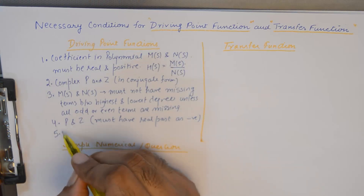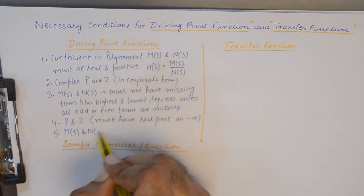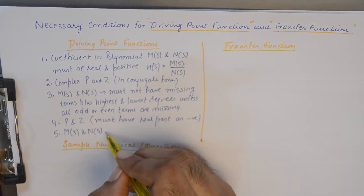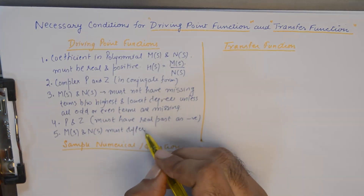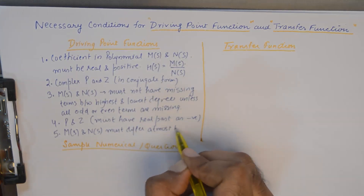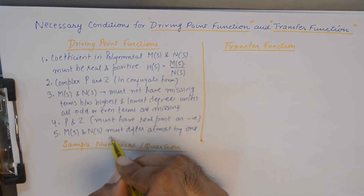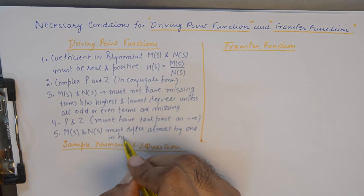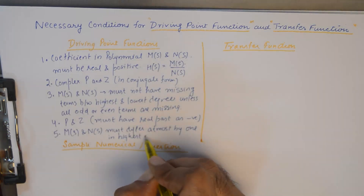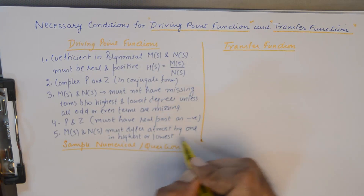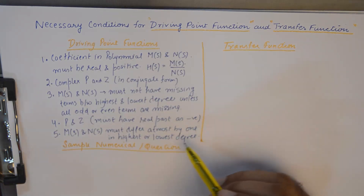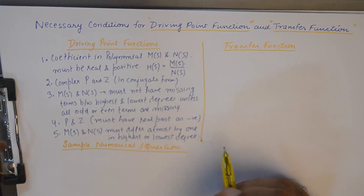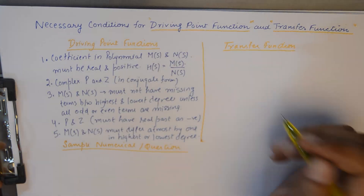And lastly, M(s) and N(s) must differ by at most one in the highest or lowest degree. So the degree of the polynomials should not differ by more than one.